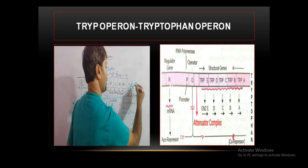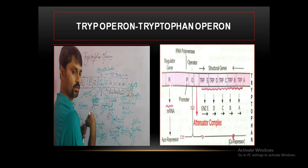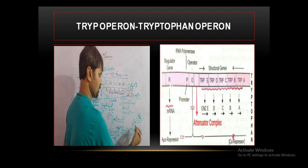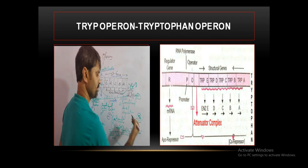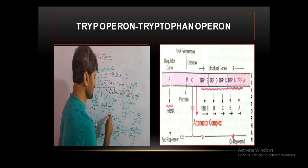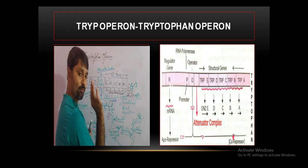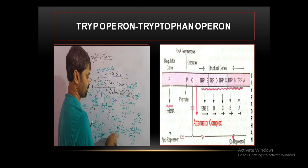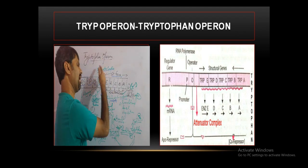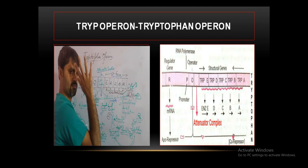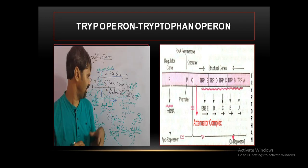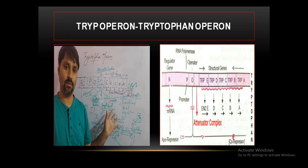When tryptophan concentration is high, the terminator loop between segments three and four forms, stopping translation. The LA complex — also called the attenuator complex — regulates the rate of the operon at the translational level. The pace of translation is controlled. This is the regulation of the gene at the translational level with the involvement of the attenuator complex.